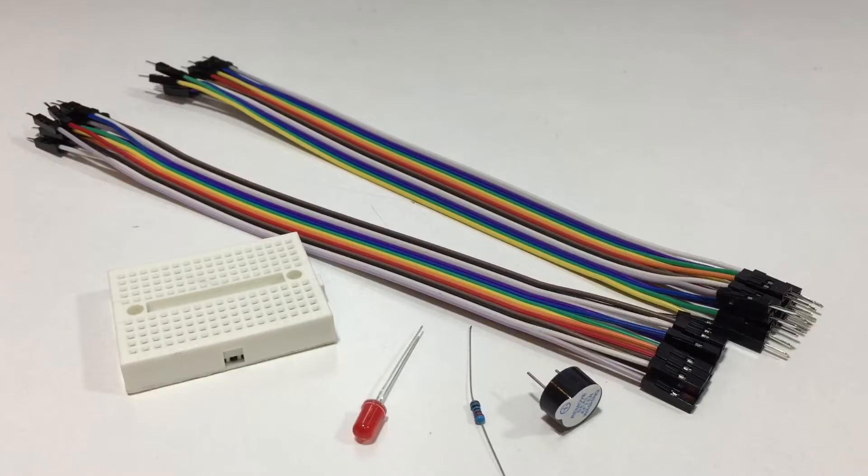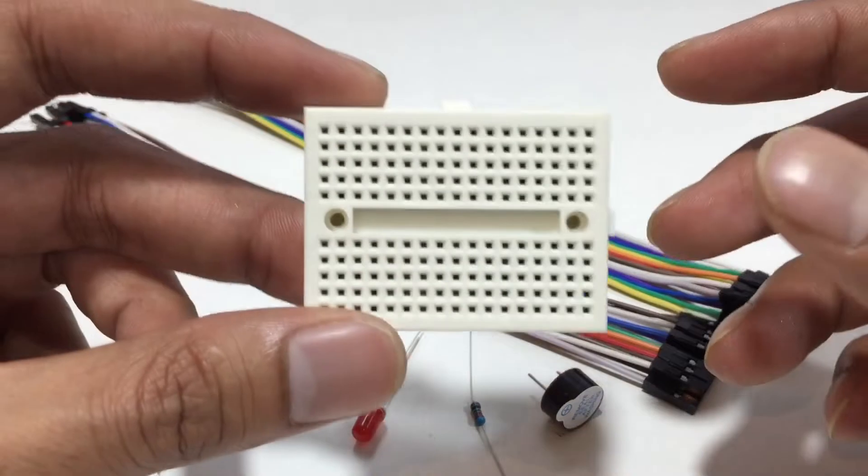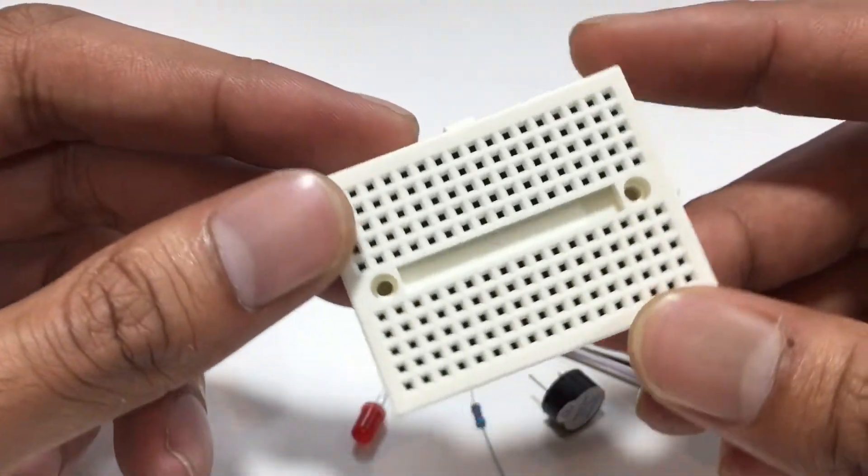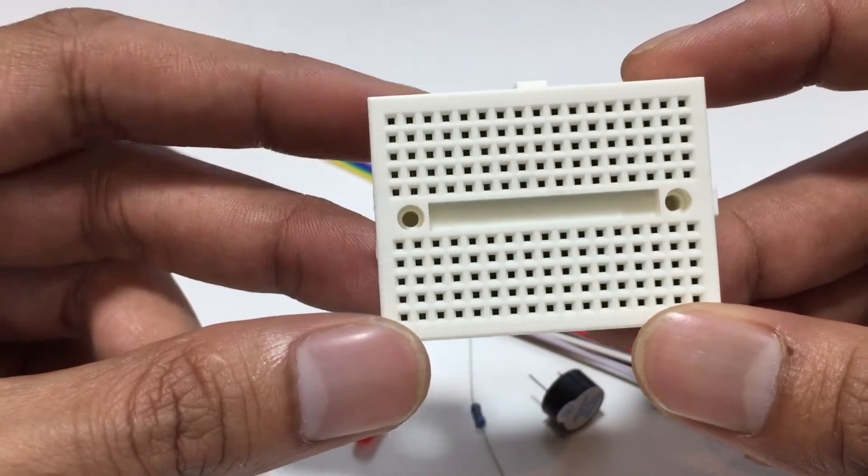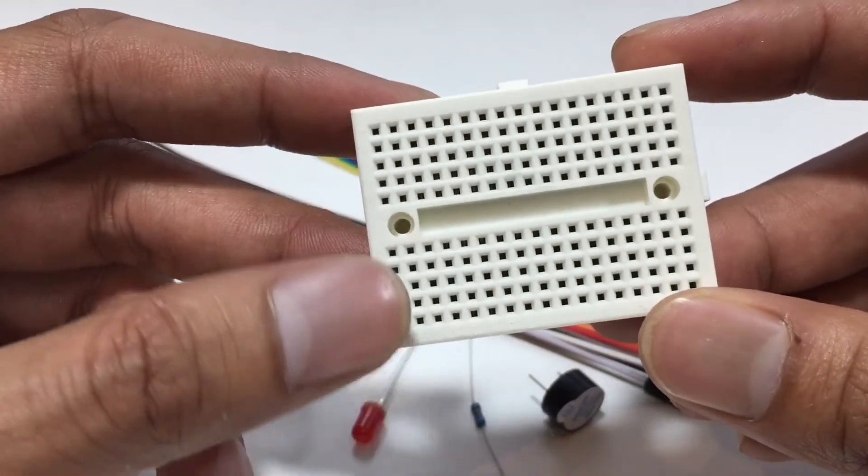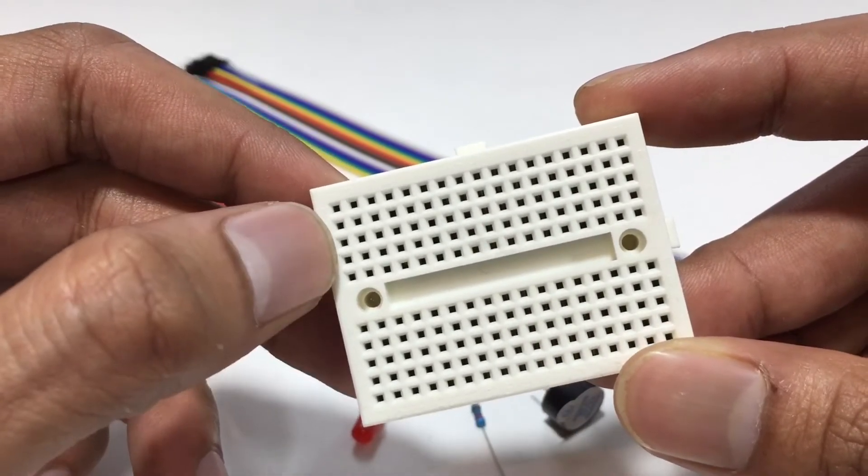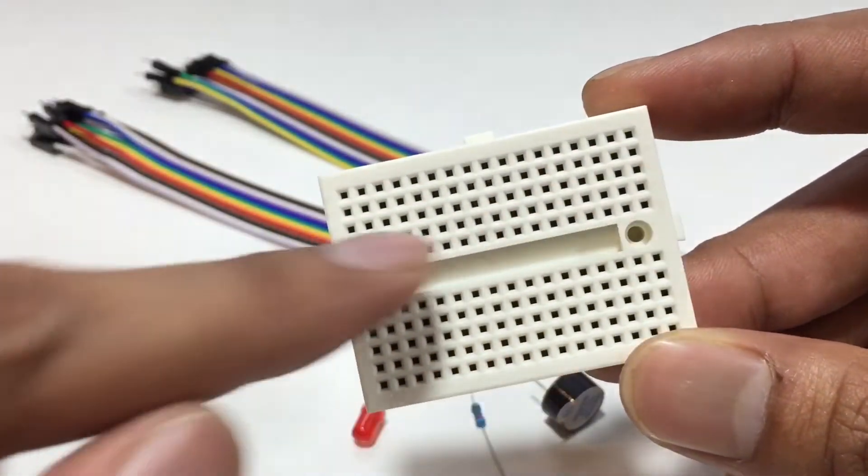These are the other components in here. This is 170 point solderless mini breadboard. In this breadboard, these 5 pins are shorted, like these 5 pins, all the other 5 pins.